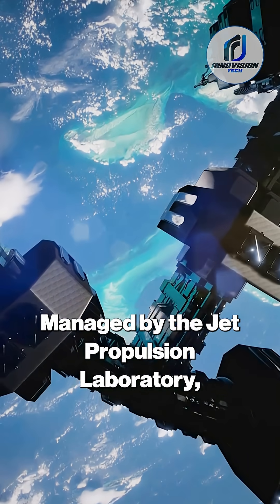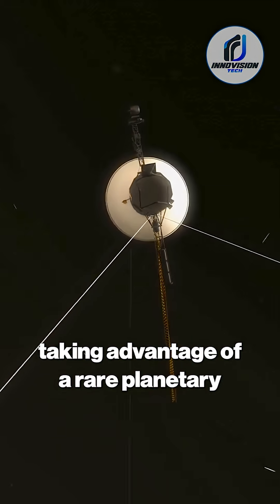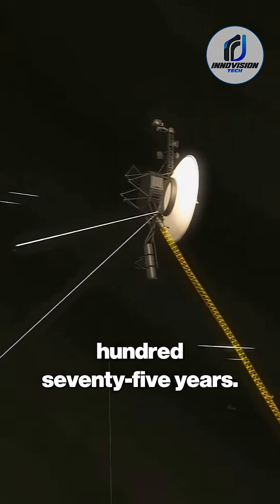Managed by the Jet Propulsion Laboratory, Voyager 1 and Voyager 2 launched in 1977, taking advantage of a rare planetary alignment that happens only once every 175 years.